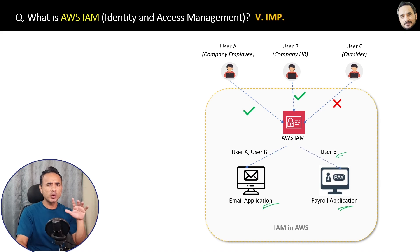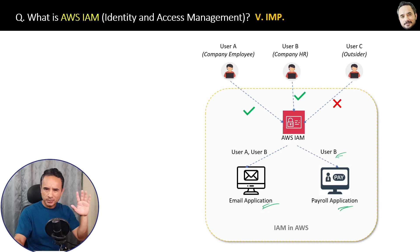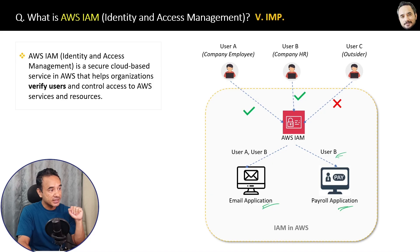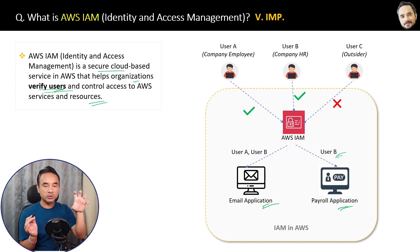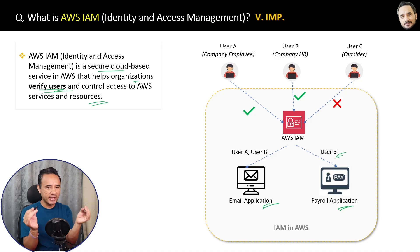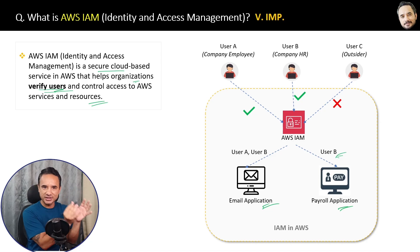IAM implements authentication and authorization concepts. If you are confused between the two, don't worry — I will explain them in an upcoming question. Here is the simple definition: AWS IAM is a secure cloud-based service in AWS that helps organizations verify users and control access to AWS services and resources. In short, IAM will not allow unauthorized users to access your AWS applications.